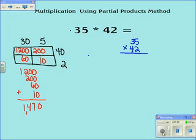and I'm going to say 40 times 30 is 1,200.